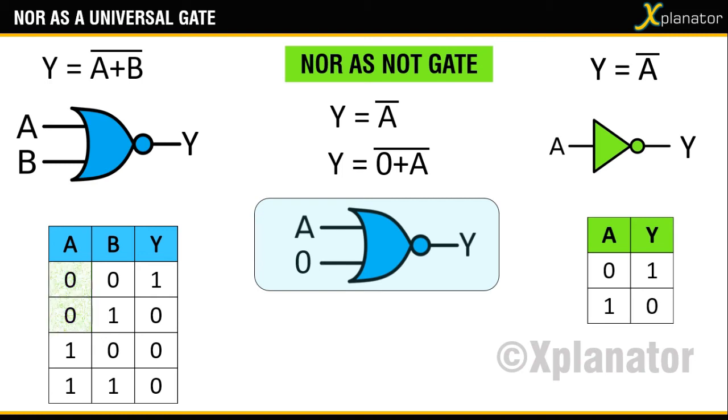The same is true if you set B as LOW and change the values of A. For different values of A, you will get the exact opposite values for Y.